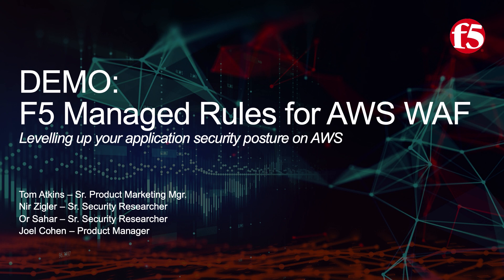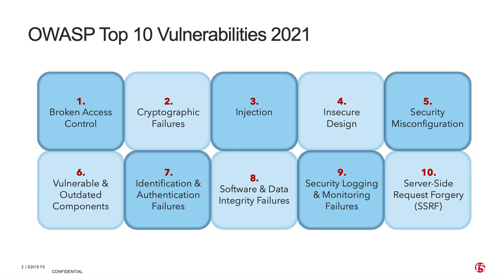This includes bots, OWASP top 10 vulnerabilities, API threats, and common application vulnerabilities and exposures, or CVEs as they're commonly known. In this demo, we're going to be highlighting some of the types of application attacks that can be mitigated using F5's OWASP top 10 ruleset, which provides protection against the top 10 most critical application vulnerabilities currently posing a risk to applications globally.